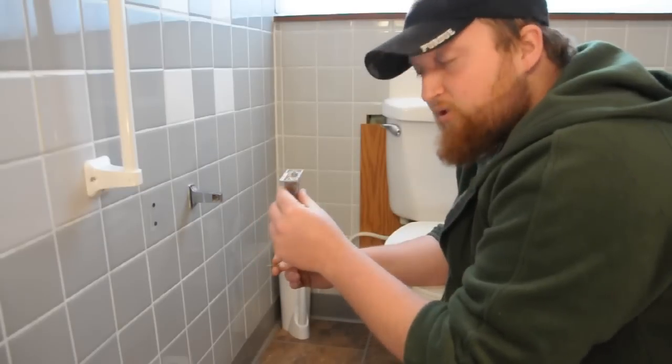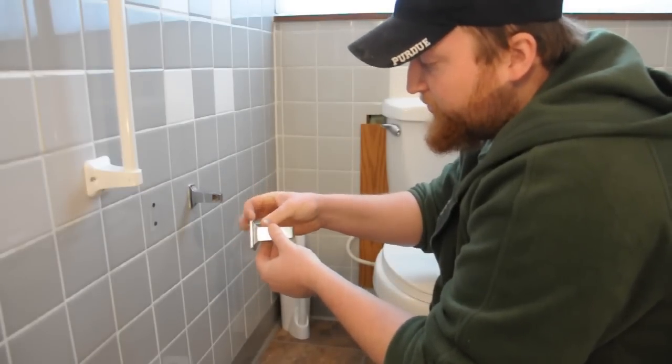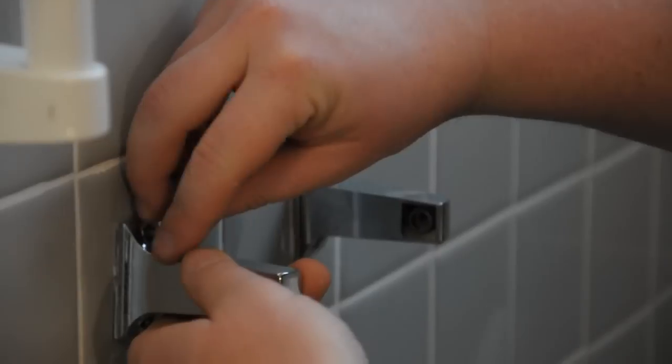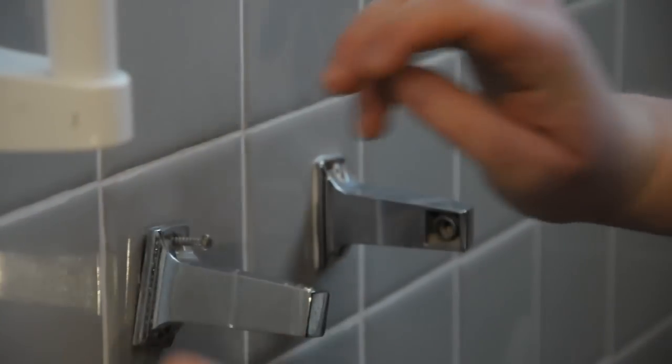Now take the other side of the toilet paper holder, place your screw through it, and line the screw up with your wall anchor. Finger tighten so that way it doesn't fall off.